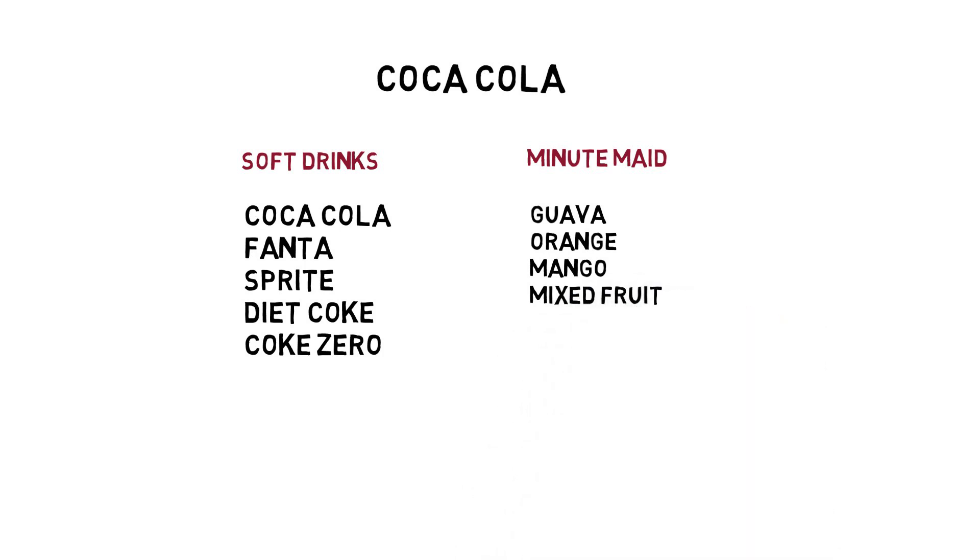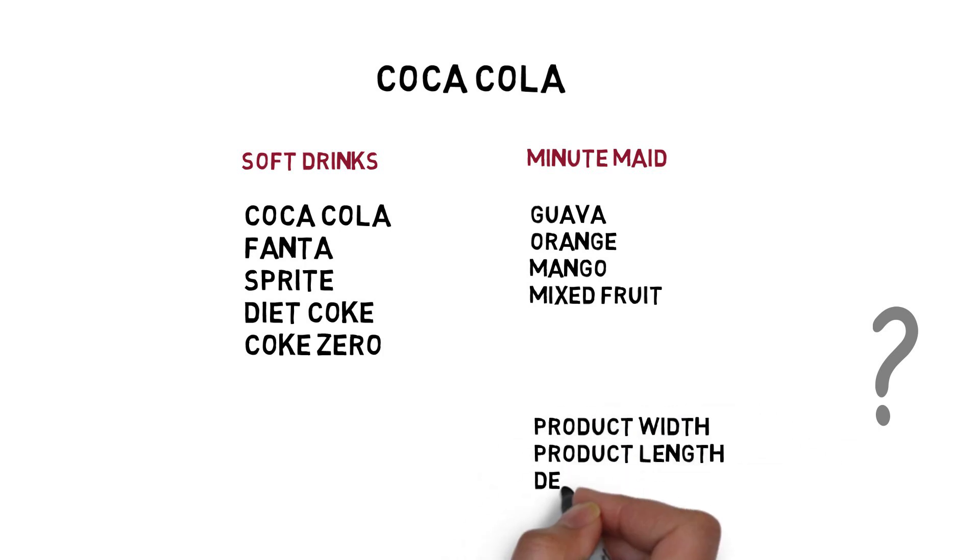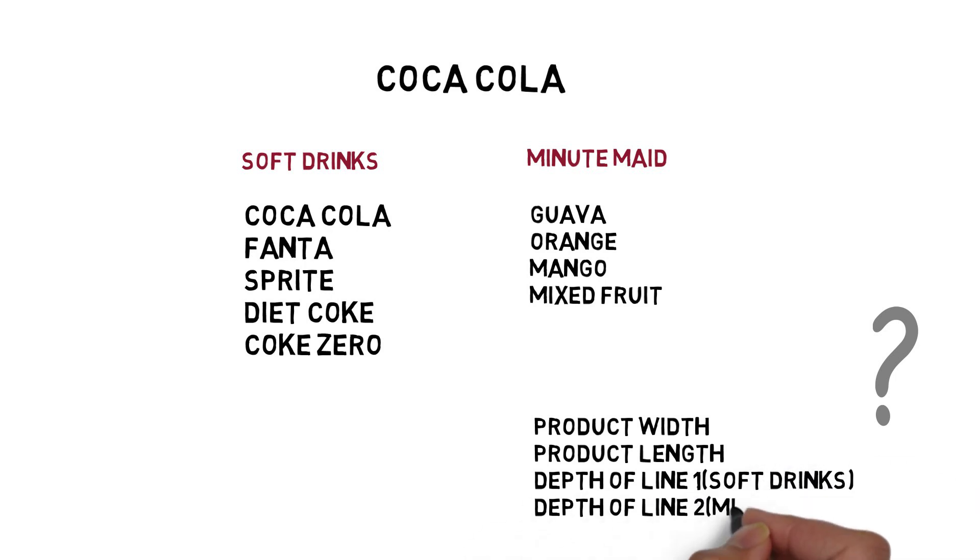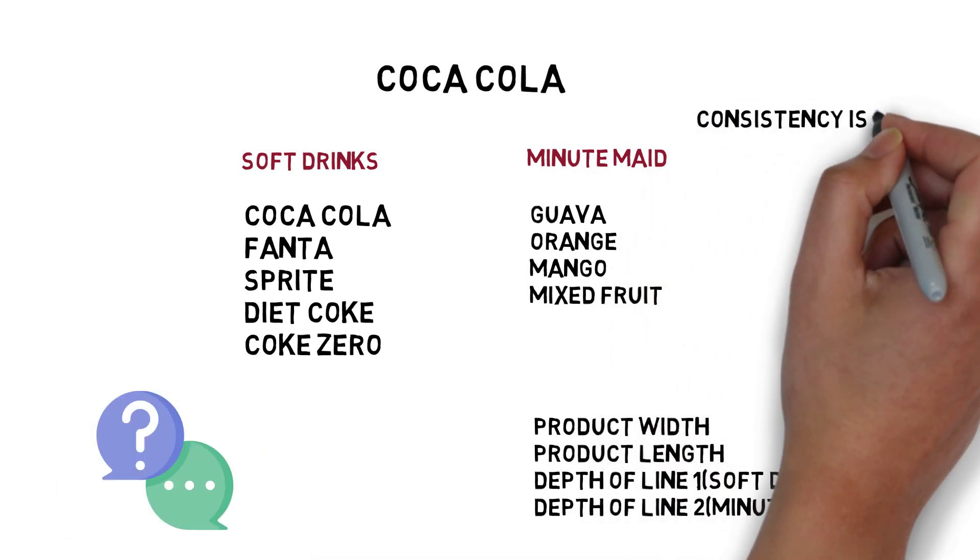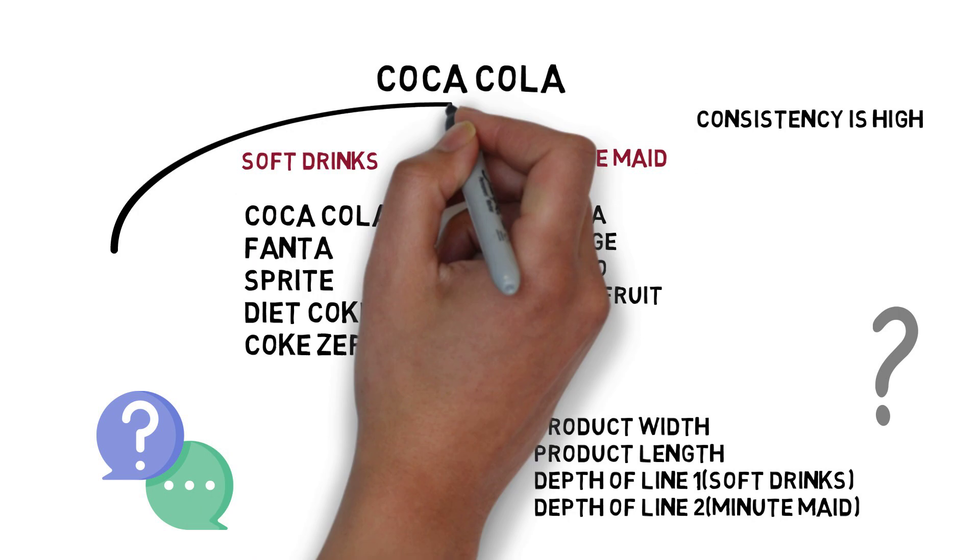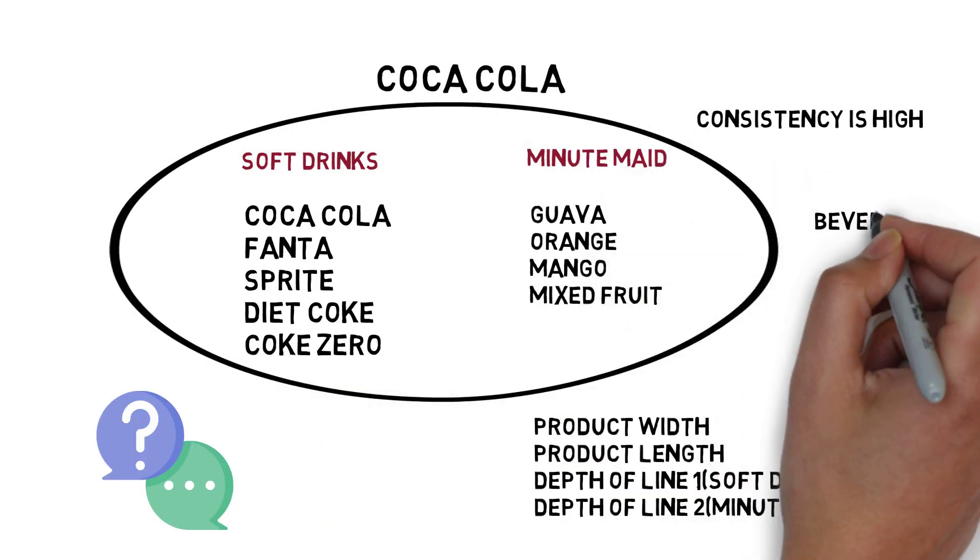This is the structure of Coca-Cola. Pause this video and find out the product width, product length, product depth of line 1 (soft drinks), and product depth of line 2 (Minute Maid) of Coca-Cola Company. Please comment your answers in the comment section. The product consistency of Coca-Cola would be high as all the product lines fall under beverage.